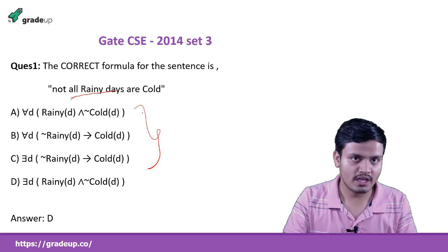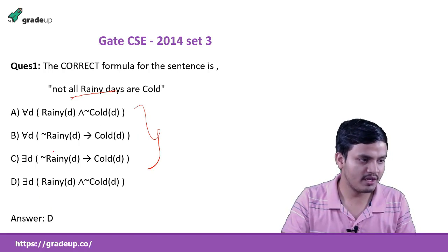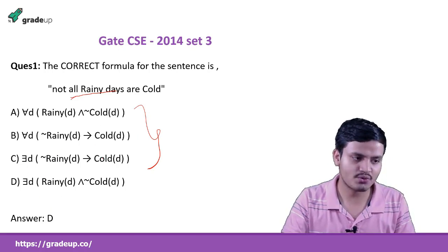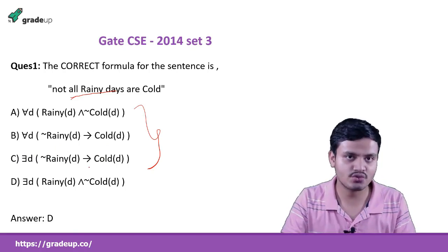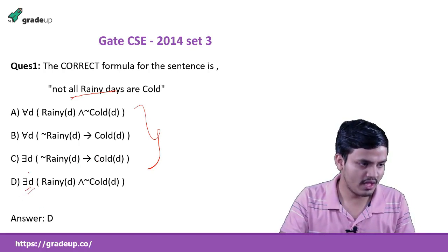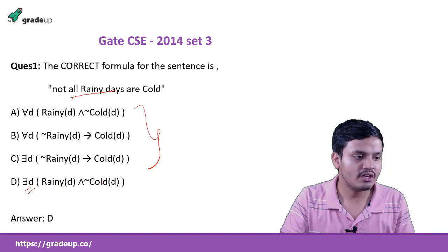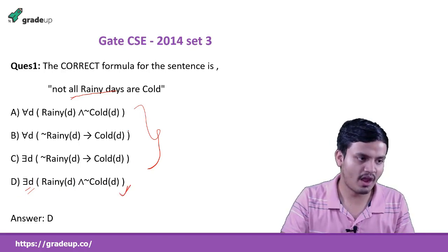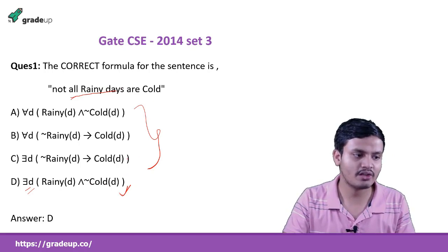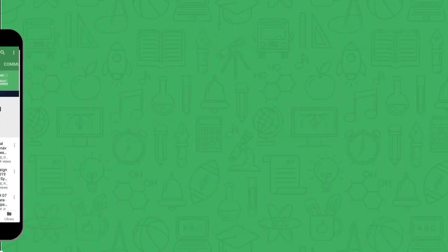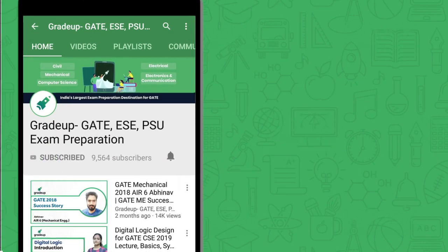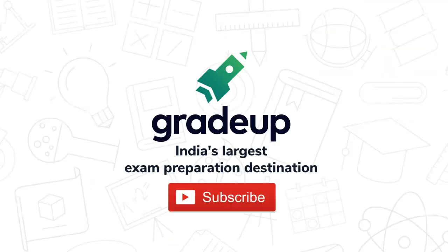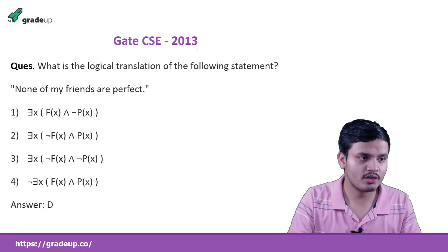The correct meaning is: there exists a day that is rainy and that is not cold. So our correct option will be D. That question came in GATE 2013.